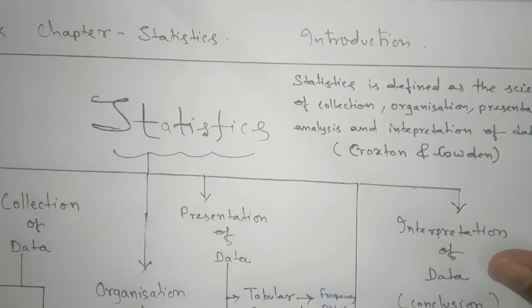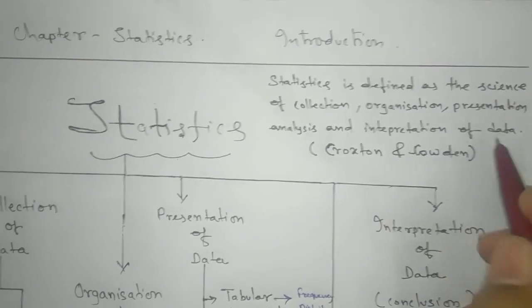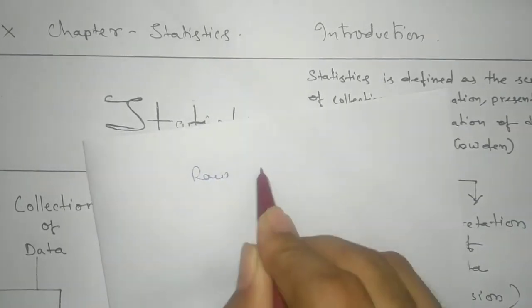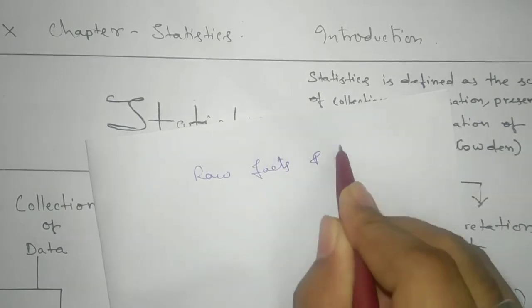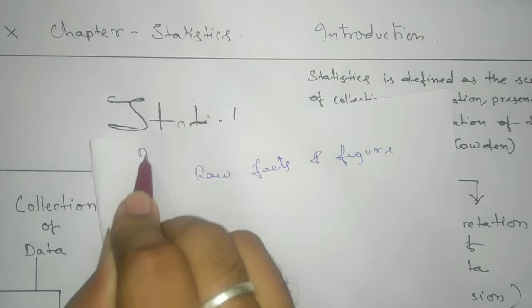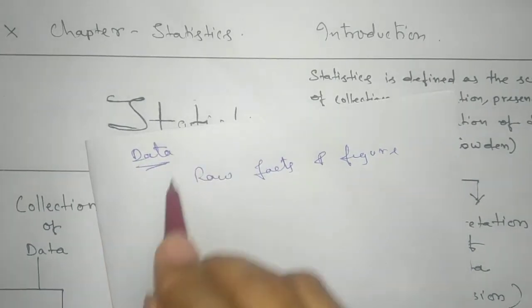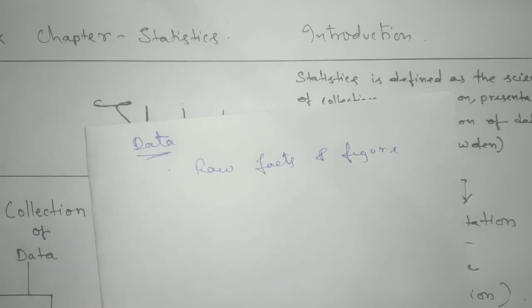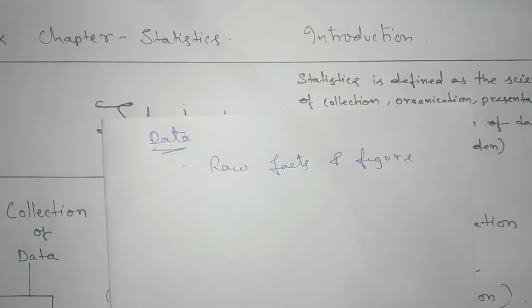So here we are going to see first data. What does it mean data? Data means raw facts and figures. Data is a plural form, raw facts and figure. That means your data should be facts and it must be numerical value. That means 1, 2, 3, 2.5, 6, root, anything. But remember it should not be any name. Name should not be there.